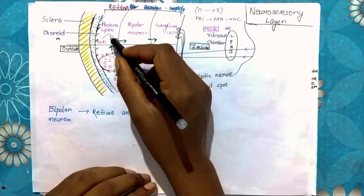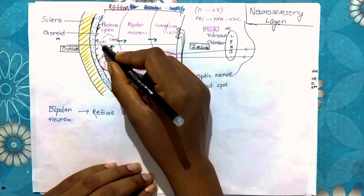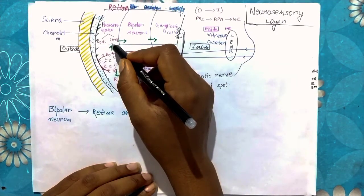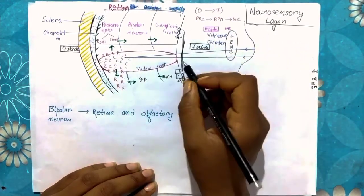When the light falls, the rod cells and the cone cells become active.